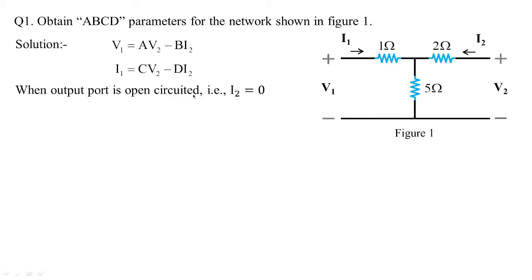When the output port is open-circuited, I2 = 0. The 2-ohm resistor becomes inactive since it is open on the other side, and I1 drives through the 1-ohm and 5-ohm resistors in series. From the standard equations with I2 = 0, the B and D terms drop out, leaving V1 = AV2 and I1 = CV2, from which we get A and C.